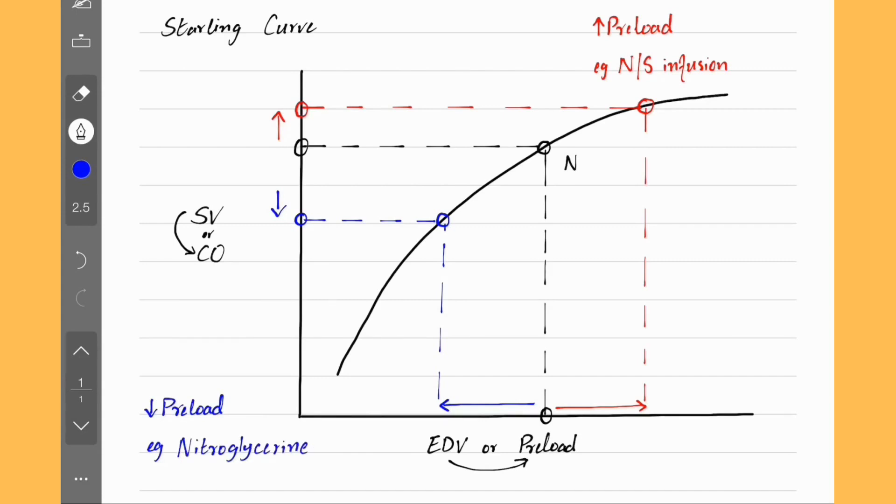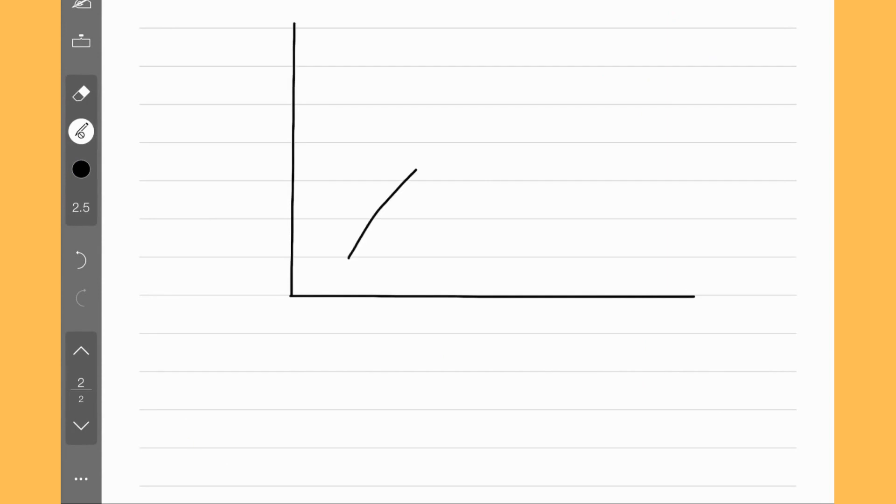But that's not the only way we can change the Starling curve. We can move the curve up or down by changing some other factors. For example, if we increase contractility, we get a new curve which is higher up. Contractility is increased by catecholamines, for example epinephrine.